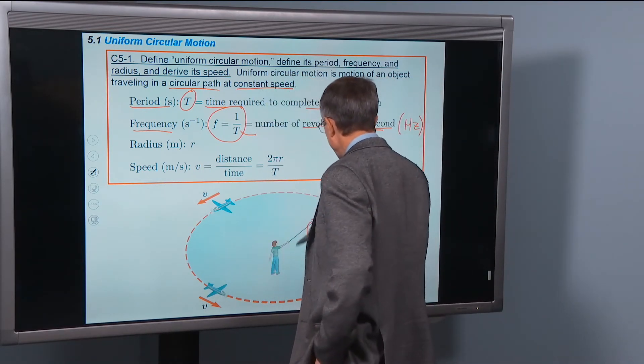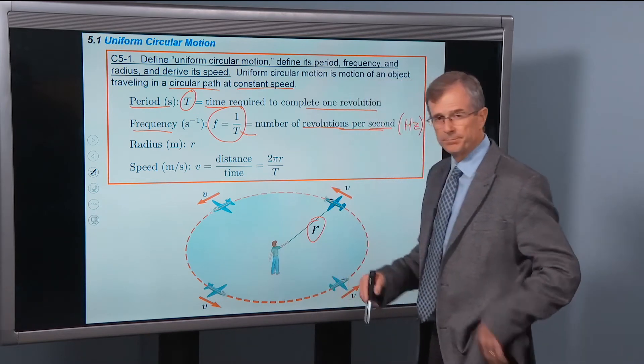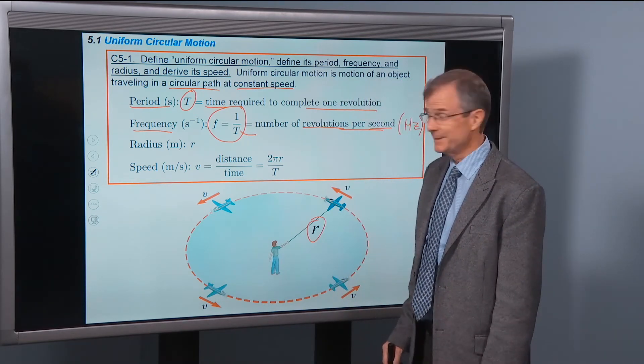Radius of the circle is r. That's just like a circle you learn in geometry.